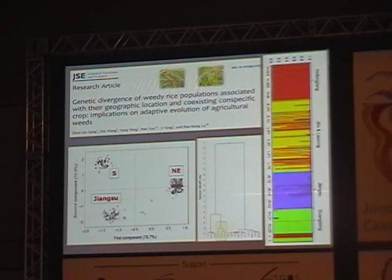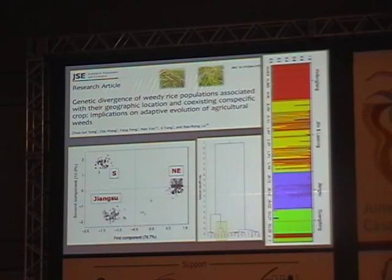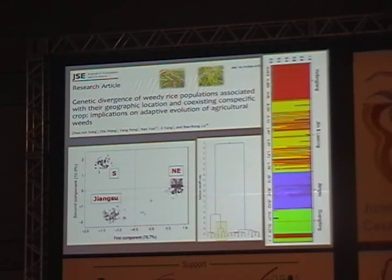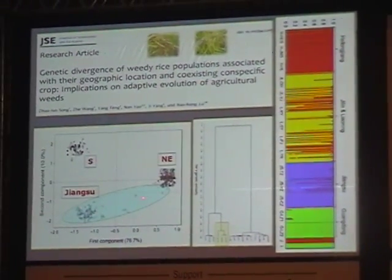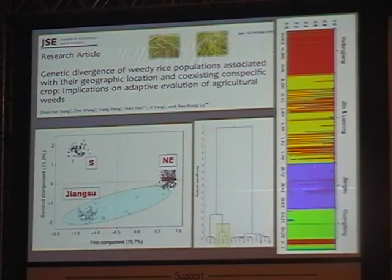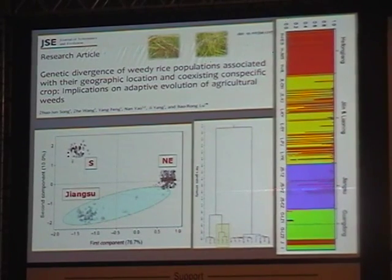We used ordinary rice varieties and weed populations to understand natural gene flow, and the frequency of outcrossing is really very high. The outcrossing rate and observed heterozygosity show positive correlations — when weed rice gets genes from the crop, it changes genetic structure and heterozygosity levels. A recently published paper also showed that in Jiangsu province, where farmers switched from indica to japonica rice, the genetic diversity of weed rice changed dramatically, with some individuals turning into a japonica-type weed rice through gene flow.